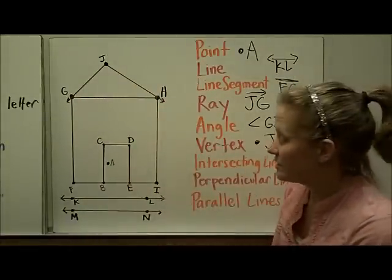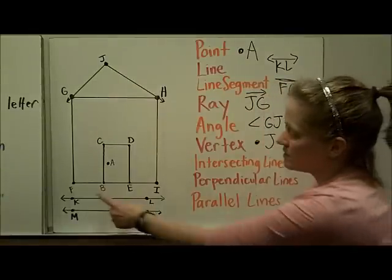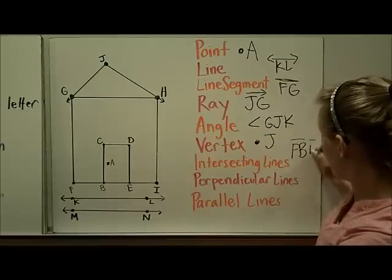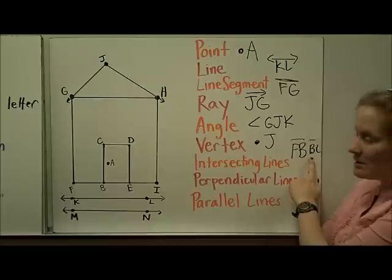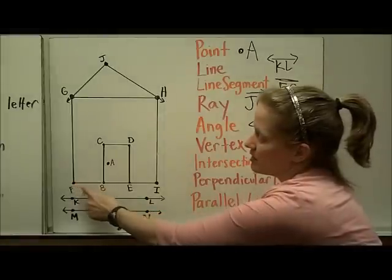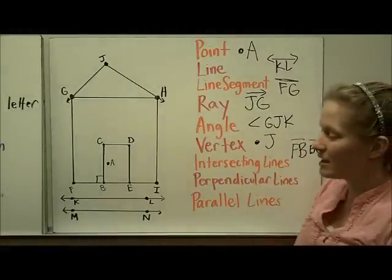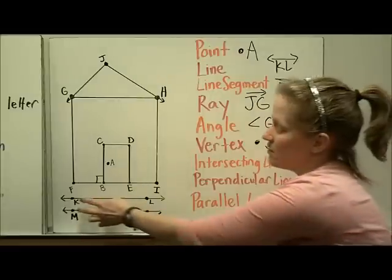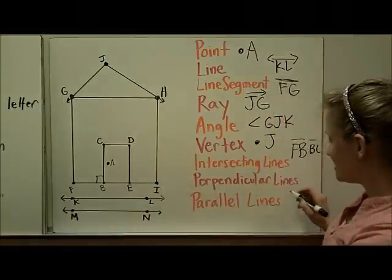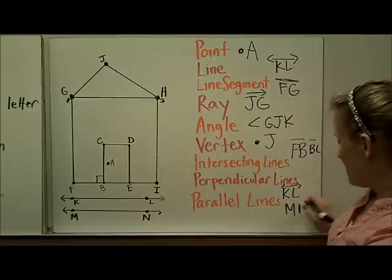For intersecting lines, line segment FB intersects with line segment BC. If we're looking for perpendicular lines, those two we just picked are actually perpendicular because they form a right angle where they meet. And finally, for parallel lines, the sidewalk here is parallel — the two sides are always the same distance apart and would never meet. So line KL is parallel to line MN.